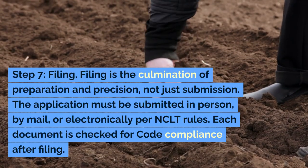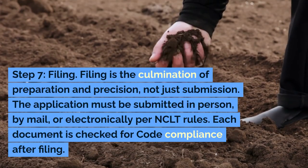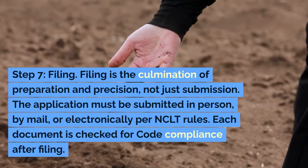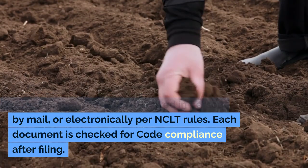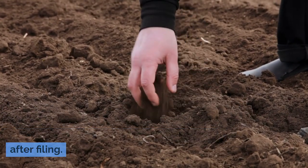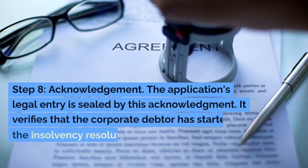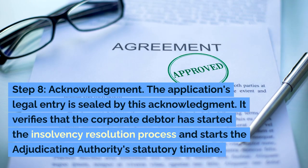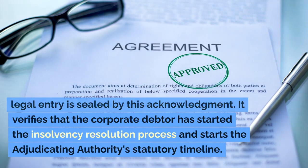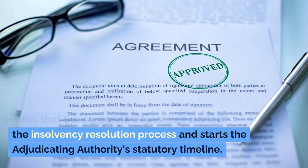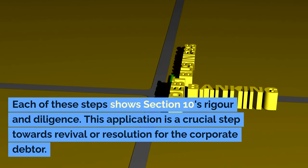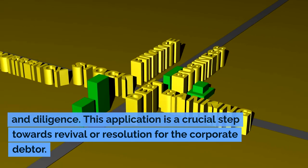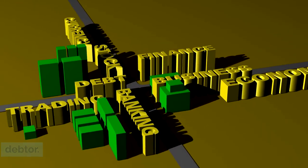Step 7 is filing. Filing is the culmination of preparation and precision. The application must be submitted in person, by mail, or electronically per NCLT rules, and each document is checked for code compliance after filing. Step 8 is acknowledgement — the application's legal entry is sealed by this acknowledgement. It verifies that the corporate debtor has started the insolvency resolution process and starts the adjudicating authority's statutory timeline. Each of these steps shows Section 10's rigor and diligence.